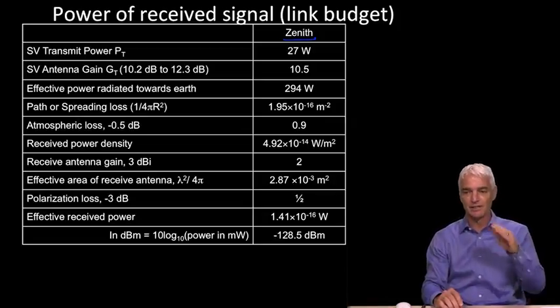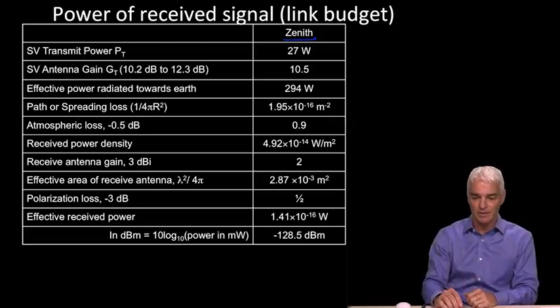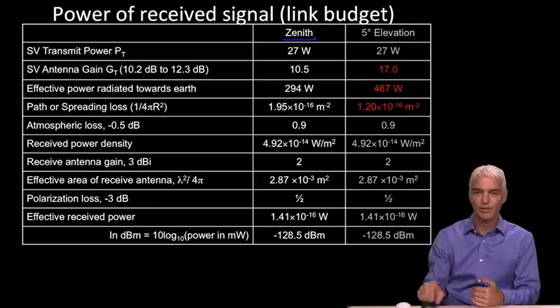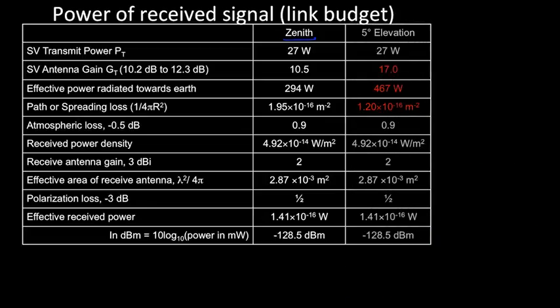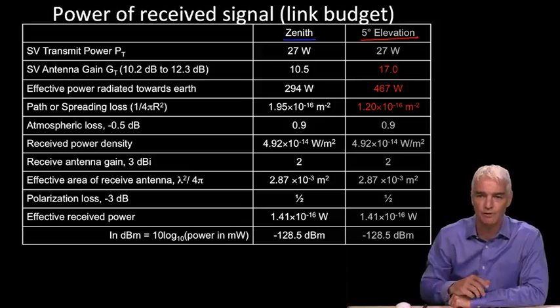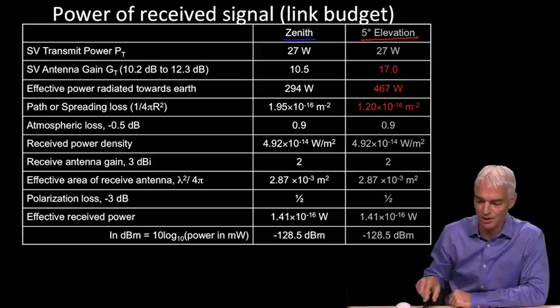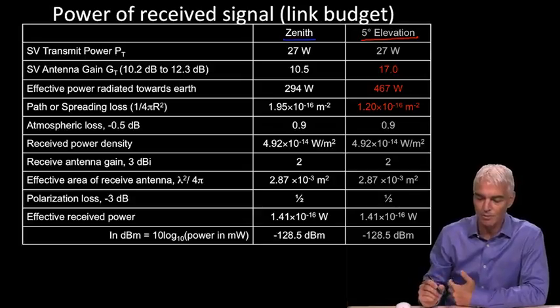What about a satellite that seems to be on the horizon? So that would have been the red line in the previous slide. So let's say for a satellite at five degrees elevation as viewed from the Earth. And then what I've done here is just showing the numbers that are different in red, and the other numbers are the same.